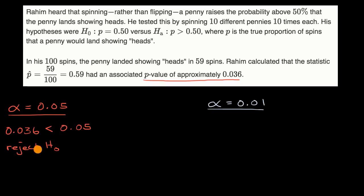And in everyday language, rejecting the null hypothesis is rejecting the notion that the true proportion of spins that a penny would land showing heads is 50%. And if you reject your null hypothesis, you could also say that suggests our alternative hypothesis that the true proportion of spins that a penny would land showing heads is greater than 50%.